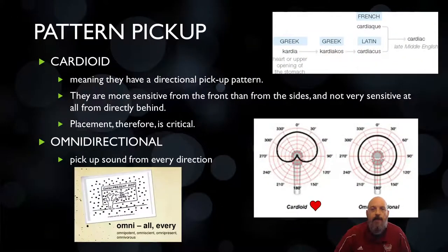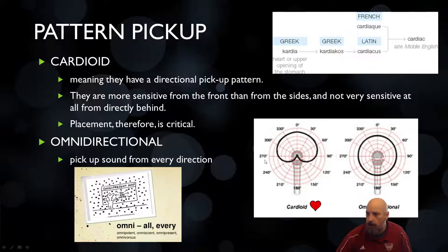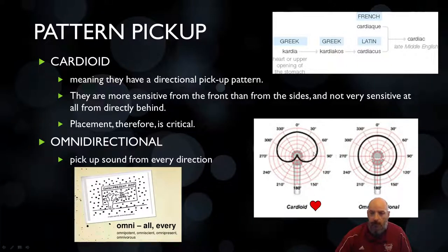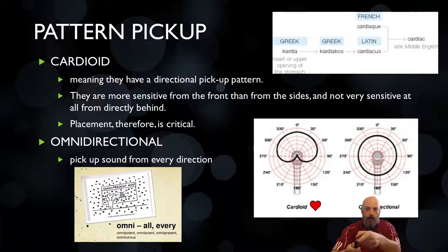Depending on what type of microphone you need, a microphone has the ability to pick up sound in different directions, and the best way to tell what a microphone can do is by looking at what's called a pickup pattern. One type of pattern is what's known as a cardioid. On the bottom left screen you have a pattern that looks like an upside-down heart shape. This is designed to tell you that most of the audio is going to come from the front of the microphone — not really going to pick up on the back.